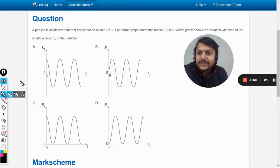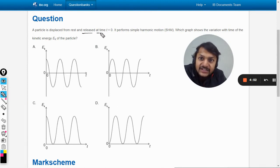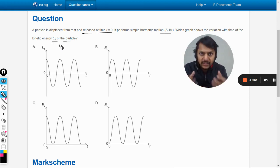Dear students, let us read this question. A particle is displaced from rest and released at time t equals zero. It performs simple harmonic motion. Which graph shows the variation with time of the kinetic energy of the particle? So we need to comment on the kinetic energy of the particle, and we have to first create the expression.